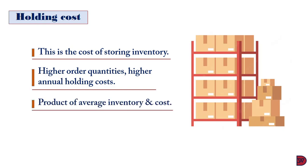This cost is established by multiplying the average inventory by the holding cost per unit. An average inventory is used because it is assumed that the storage unit is not full half the time, since goods would have to be moved out to be sold. So once goods are stored, at many points in time they have to be moved out, meaning the inventory storage unit is always assumed to be half full.